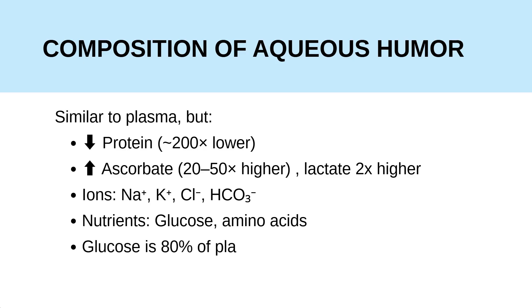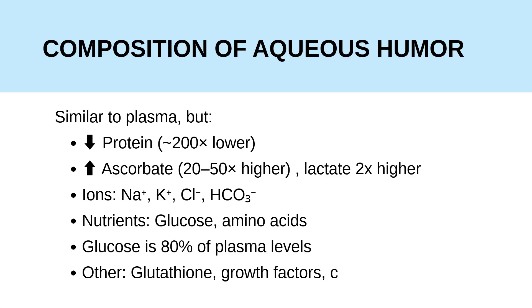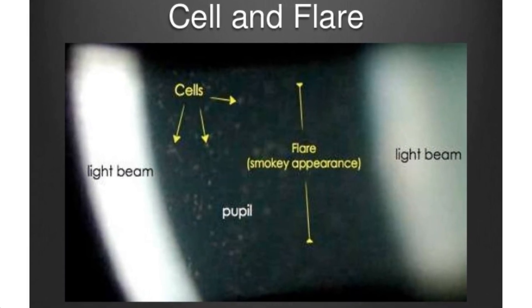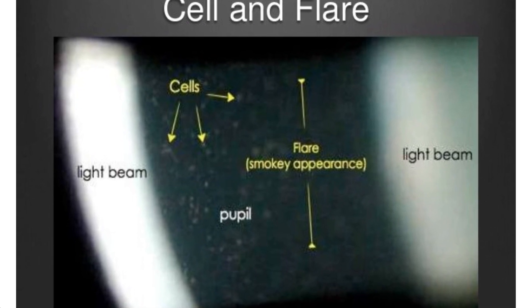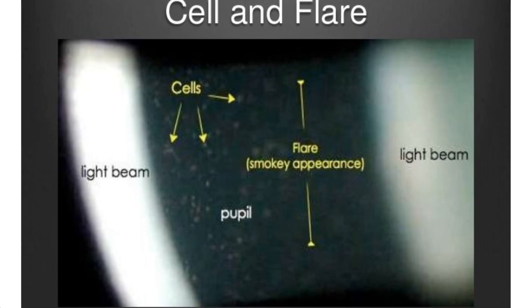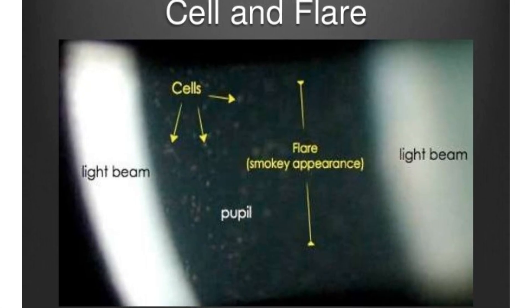We discuss the blood-aqueous barrier in our video on the anatomy of the ciliary body and also the uvea. Whenever there is inflammation, there is damage to the blood-aqueous barrier, and in those situations you will see cells and protein increase within the aqueous humor — seen as flare, fibrin, or cells — which can blur vision. Normally, aqueous humor has 200 times lower protein content than plasma.